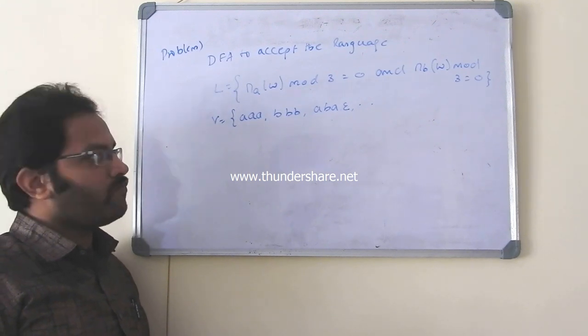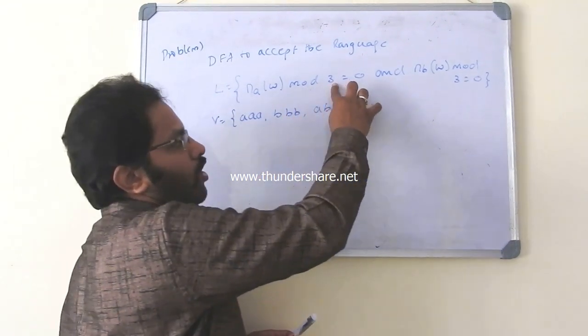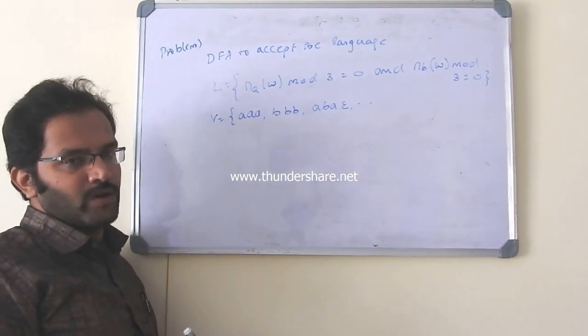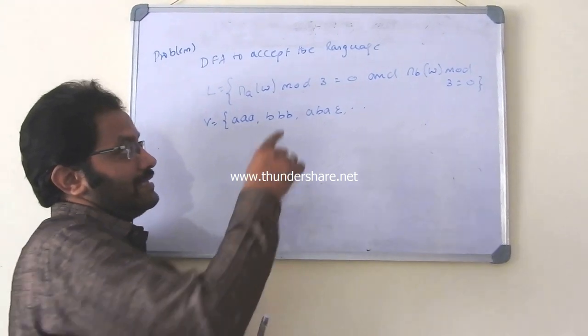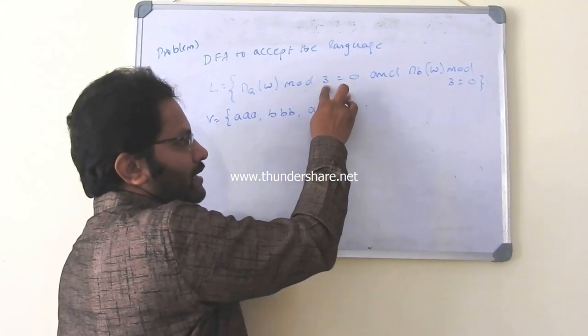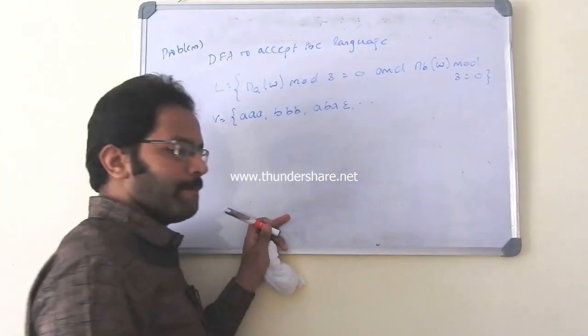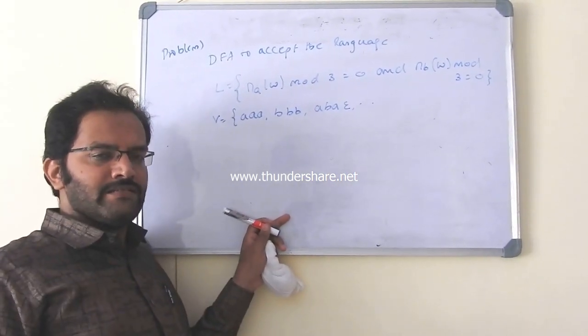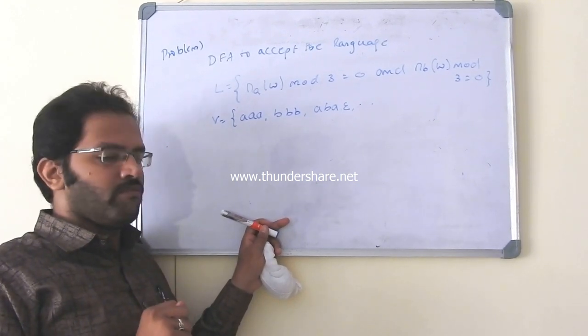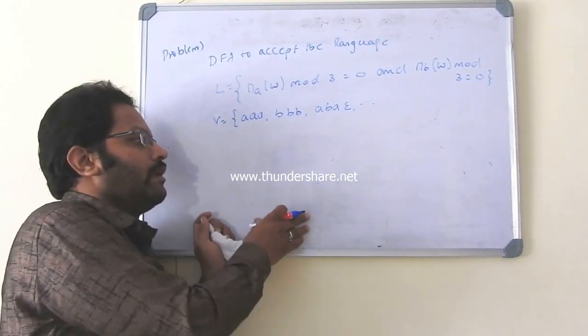But here, we try to find out the mod value. If mod value is 3 and 3, we say it as 9 states required. So check for this. Whatever you are doing, the mod what I am taking it is 3. Again, mod is 3. So multiply 3 into it as 9. So we need 9 states. There is one fashion to write these type of problems.